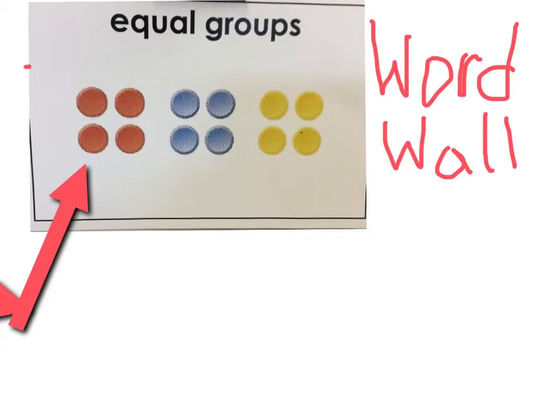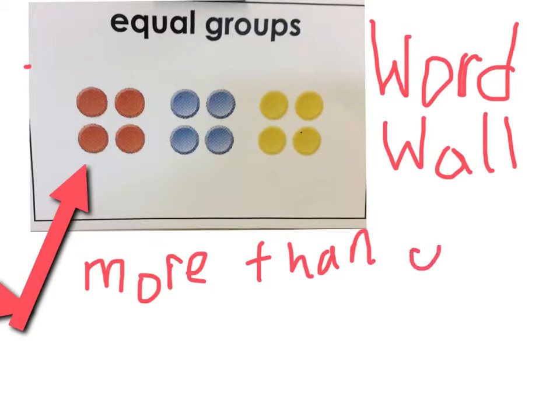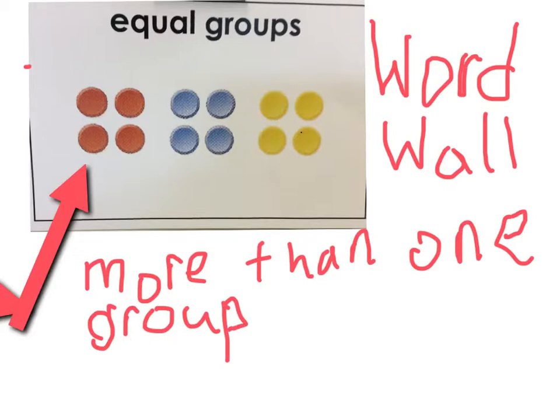First, I will show you what an equal group is. An equal group is obviously, let's write it down here. An equal group is more than one group.